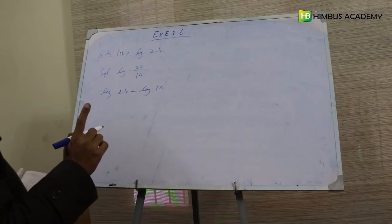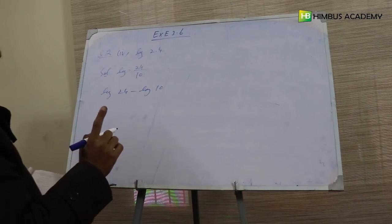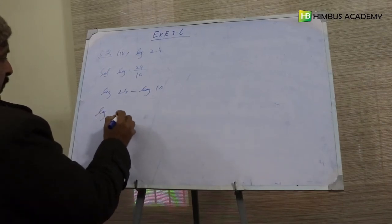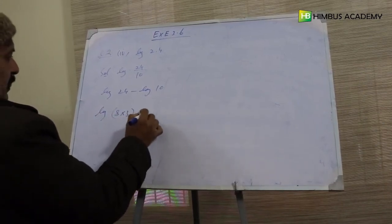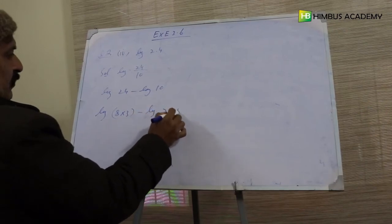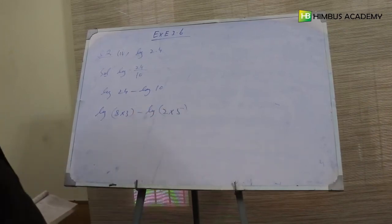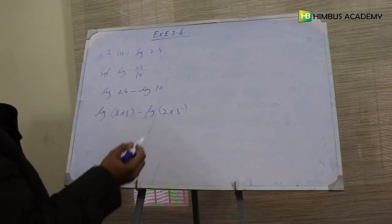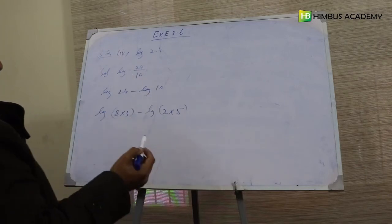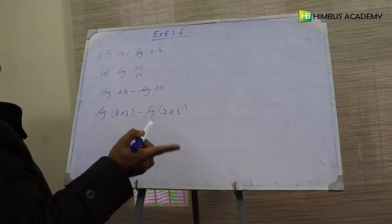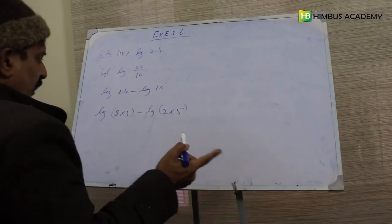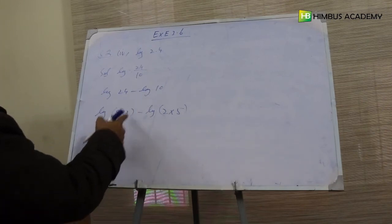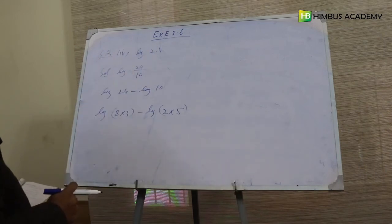24 کو ہم لکھ سکتے ہیں 8 × 3 اور 10 کو 2 × 5۔ ہم نے 8 اور 3 اس لیے لیے کیونکہ ہمارے پاس 24 کی value نہیں اور نہ 10 کی، لیکن 2، 3، 5 اور 7 کی values موجود ہیں۔ کوشش ہوتی ہے کہ numbers کو ایسے split کریں جن کی values ہمارے پاس ہوں۔